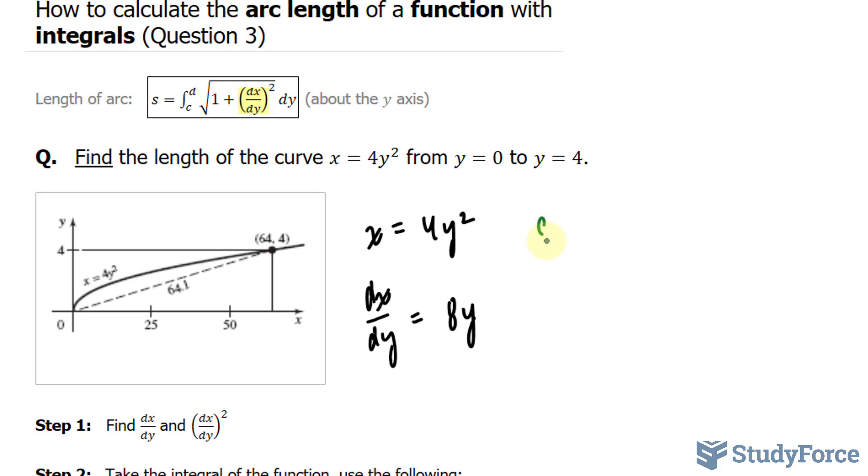Where we have s, that represents the length between the bounds 0 and 4, that's taken from the question. The square root of 1 plus 8y to the power of 2 dy.